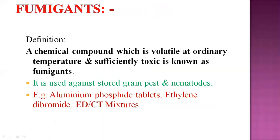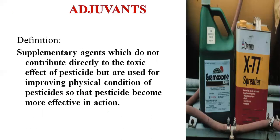Some formulations are available in gaseous form — called fumigants. A fumigant is any chemical compound or pesticide compound which is volatile at ordinary temperature and substantially toxic. It is generally used against stored grain pests, nematodes, and soil-borne organisms. Examples: aluminium phosphide tablets (used against rats), ethylene dibromide and carbon tetrachloride mixture for stored grain pests.